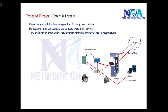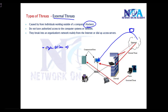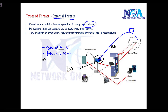Threats can also be external. Hackers are users on the internet trying to get into your network to obtain information, introduce attacks to bring the network down, or send malicious traffic that impacts performance. An attacker might also send continuous requests to a server to take it down using denial-of-service attacks.